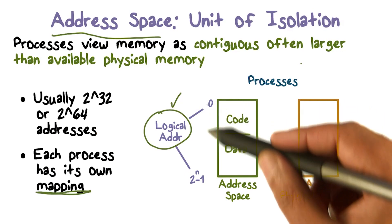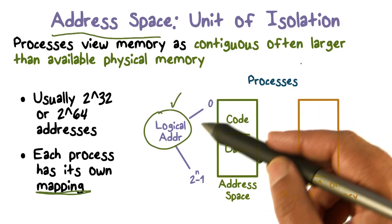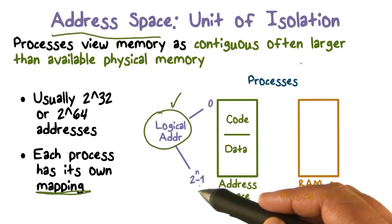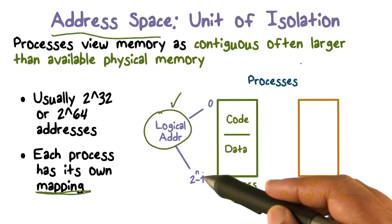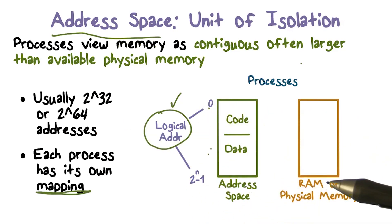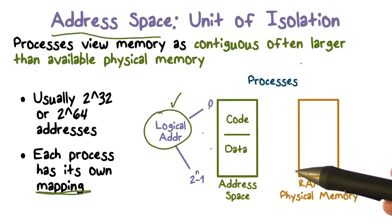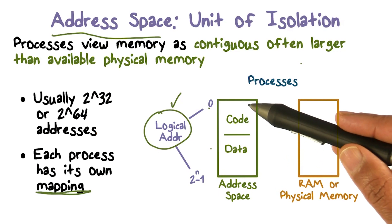So the address space that we're talking about, and the addresses that make up that address space, 0 through 2 to the n minus 1, n is 32 or 64, these are called logical addresses. This is the logical space that we define for a process.